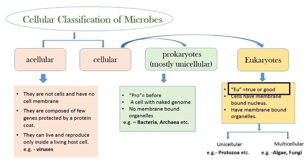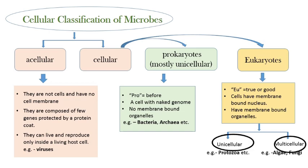What are eukaryotes? In eukaryotes, 'eu' means true — referring to the fact that they have a particular and true nuclear structure inside the cell. They also have many membrane-bound organelles inside. Eukaryotic organisms may be unicellular or multicellular. Protozoa is a good example of unicellular microorganism, whereas algae and fungi are examples of multicellular organisms.